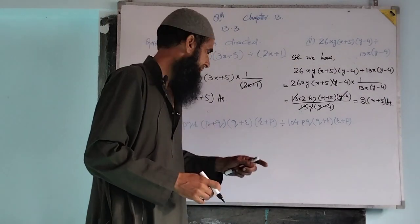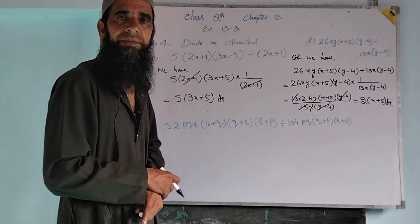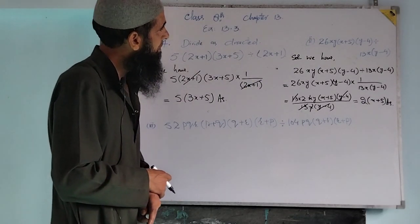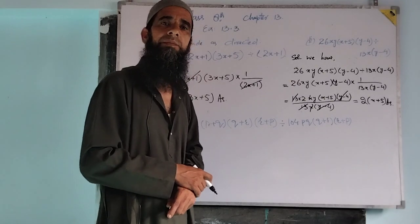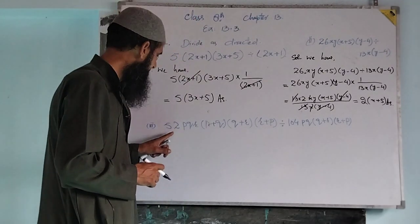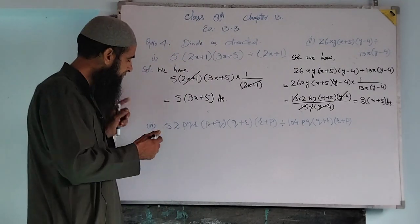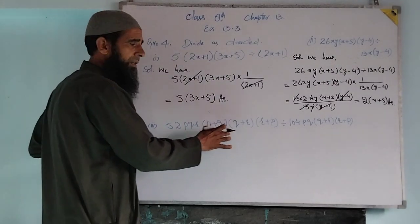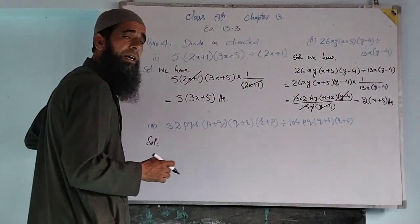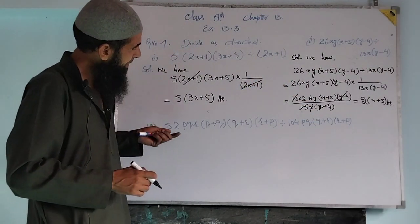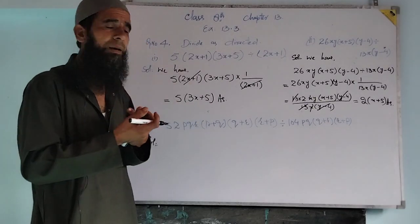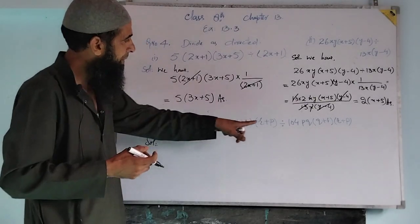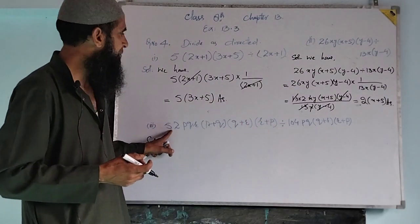Now we take the third part of this question. Again we have an algebraic expression divided by another algebraic expression. We cancel common factors directly. Here we have 52 in the numerator and 104 in the denominator.